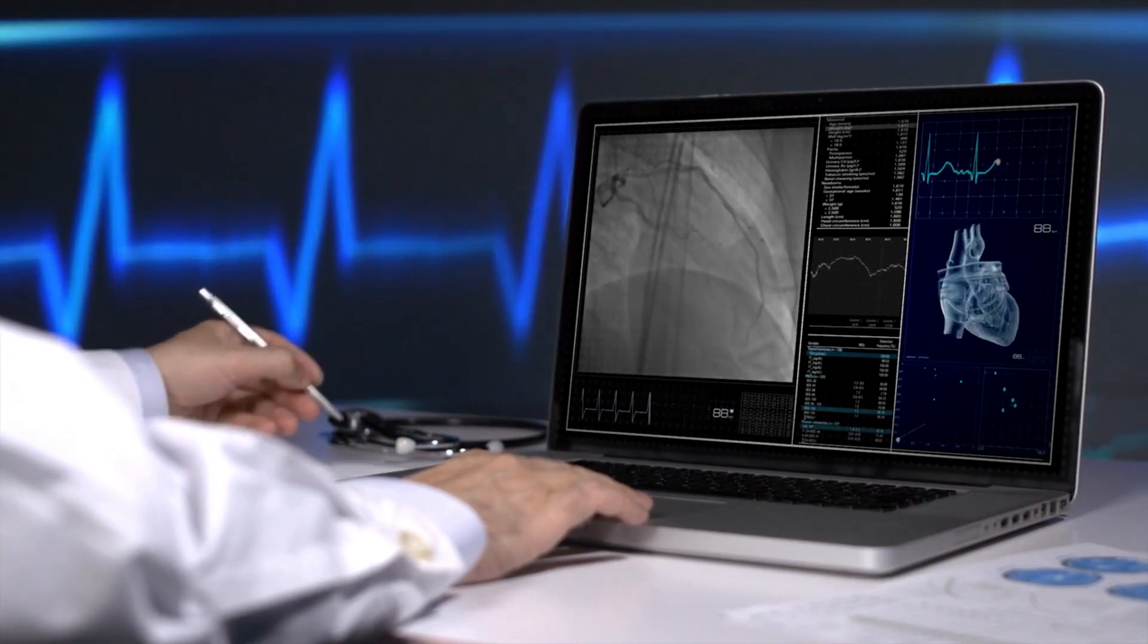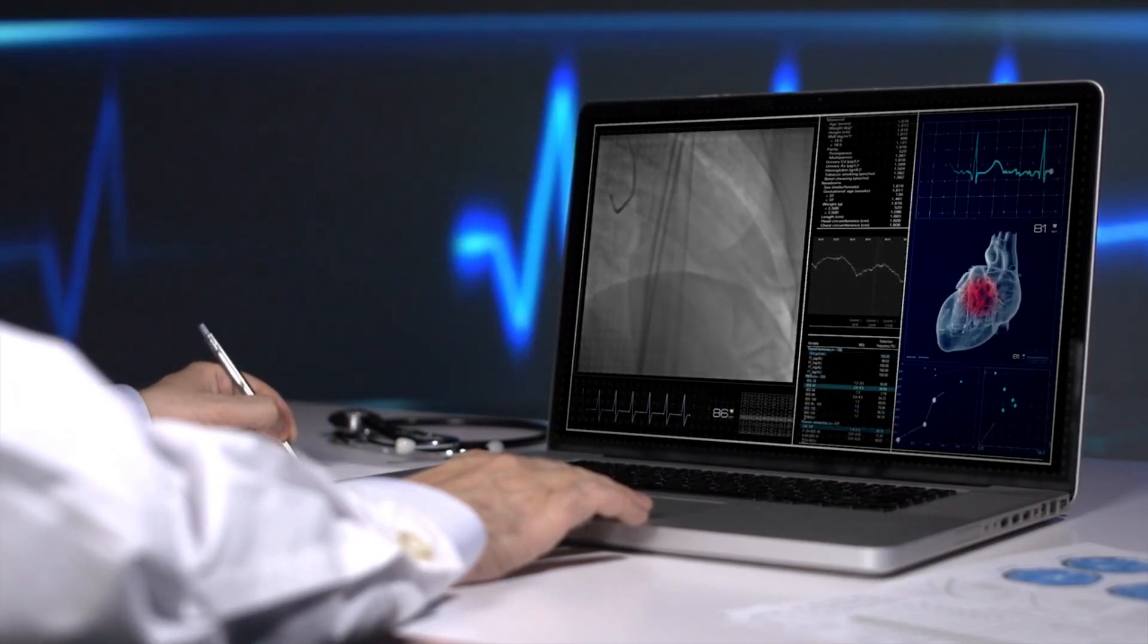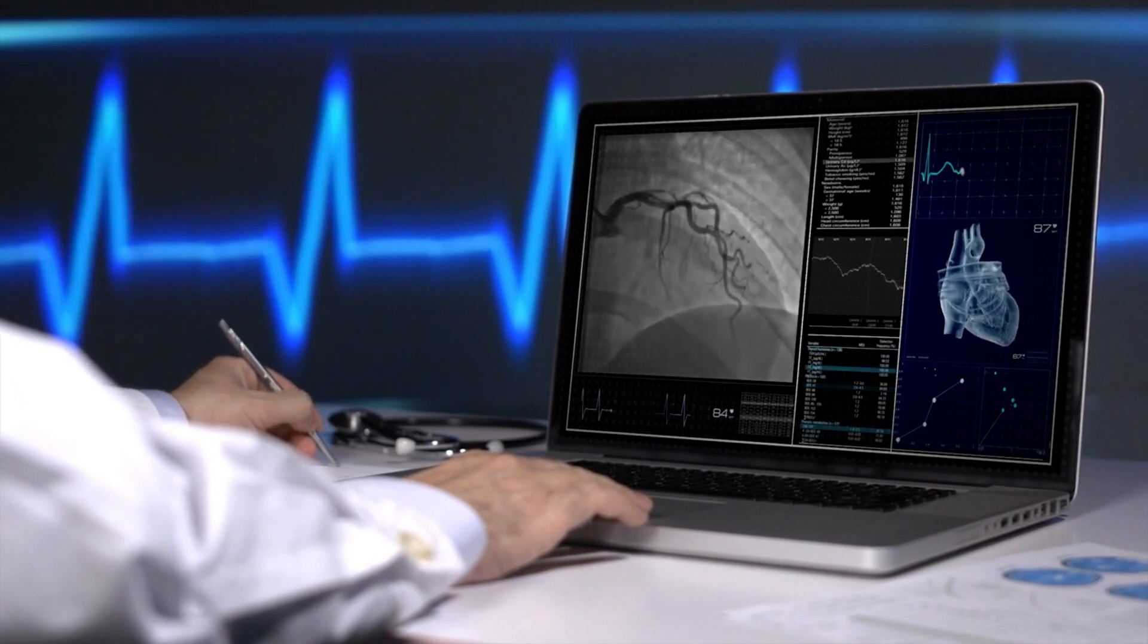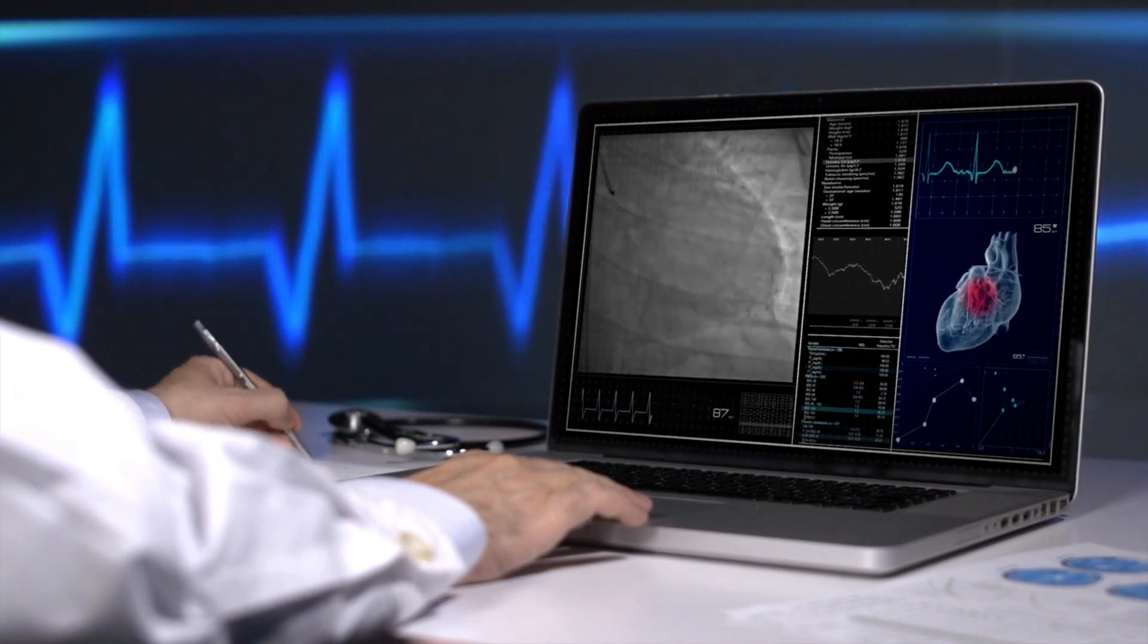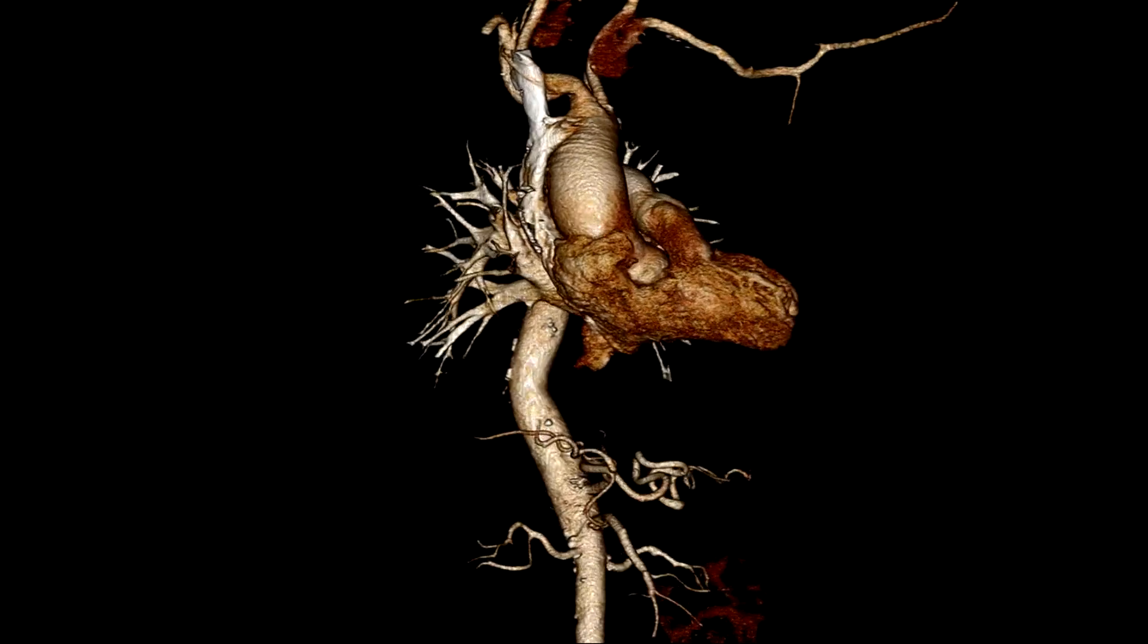A peripheral angiogram with intervention is a medical procedure used to diagnose and treat issues related to the blood vessels outside of the heart, typically in the legs or arms. Here's how it generally works.